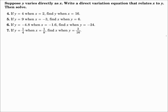Suppose y varies directly as x. Write a direct variation equation that relates x to y, and then solve. When working out questions like this, just remember to find k first. Once you find k, use that k to answer the question.